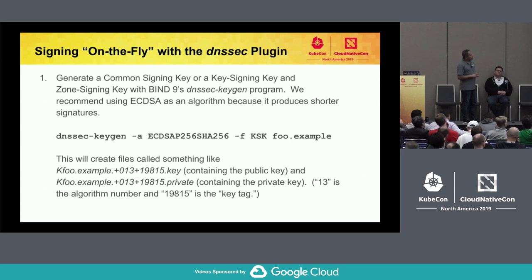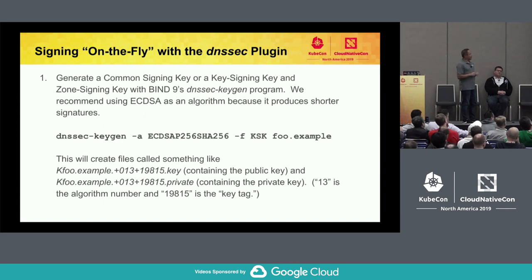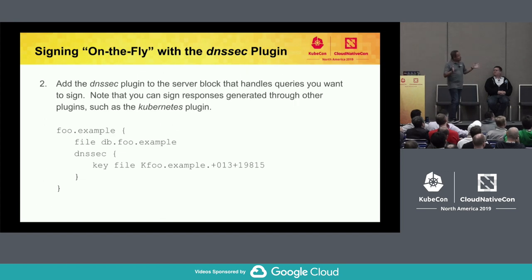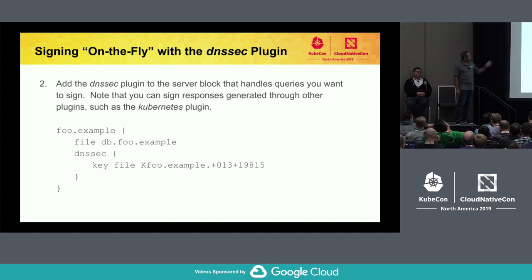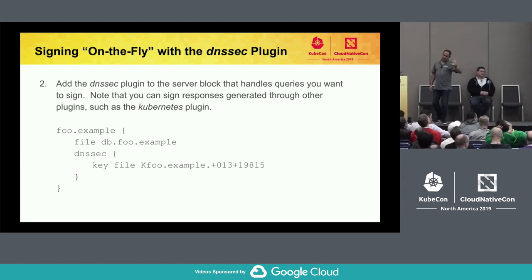Here's a command you'd use with a program called DNSSEC-keygen. This generates a key pair — in particular, using ECDSA, an elliptic curve asymmetric algorithm. This is what all the cool kids use now because it produces relatively small signatures. It generates two files: the base name plus .key, which contains the public key, and the base name .private, which is the private key — which, of course, you should keep private.